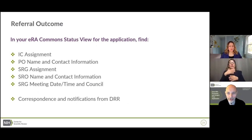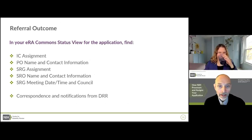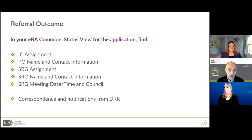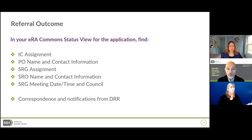At the end of the receipt and referral process, you'll have an IC assignment — a primary, and possibly one or more dual assignments if multiple ICs might be interested in your science. Once the ICs have your application, they will assign a program officer. You'll have an application number once the review chief clears their queue, and a study section assignment that tells you who your SRO is. All of this information is available on the eRA Commons status view page, including the name and contact information for both the SRO and the PO, and the review meeting date and time.